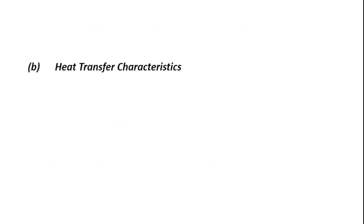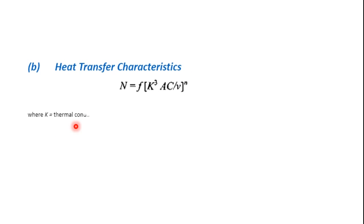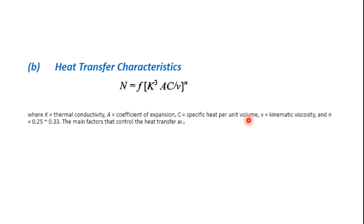Then we have heat transfer characteristics. In equipment filled with liquid dielectric — like transformers, cables, and circuit breakers — heat is transferred mainly by natural convection. Under natural atmospheric conditions, the cooling convection is given by: N = f · k³ · a · c / v^n, where k is thermal conductivity, a is the coefficient of expansion, c is specific heat per unit volume, v is kinematic viscosity, and n varies from 0.25 to 0.33. The main factors controlling heat transfer are thermal conductivity and viscosity.